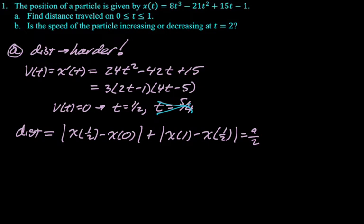All right. Is the speed of the particle increasing or decreasing at t equals 2? To know if speed is increasing or decreasing, we need to know the sign of the velocity and the sign of the acceleration. If they're the same, speed is increasing. If they're opposite, speed is decreasing.